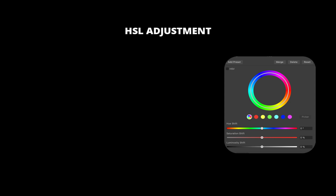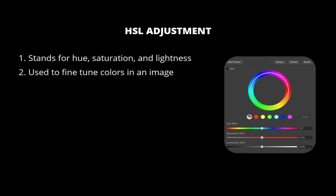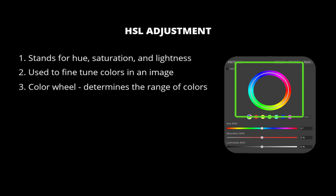But what is the HSL adjustment? HSL stands for Hue, Saturation, and Lightness. It allows you to fine-tune the colors in your image or even completely change them. It has six adjustable settings. The first is the color wheel — when using a particular channel, this allows you to determine the range of colors affected by the channel using four nodes.